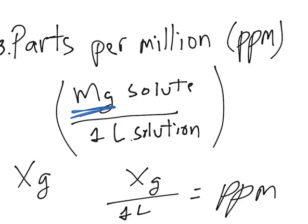So if you're given x grams, be careful — it's actually milligrams you need. You will multiply x grams by a thousand to convert to milligrams, and that converted value is what you write in the numerator.